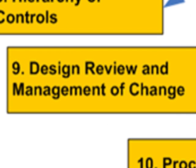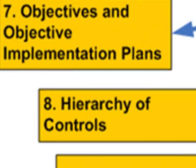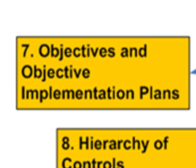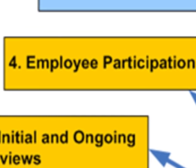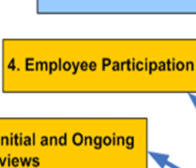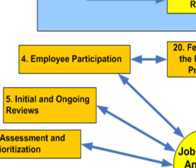The design review — what are we doing and how are we doing it — objectives and implementation plans as we move forward and we know what we're doing through a definite analysis of the tasks and jobs. The initial ongoing reviews, the setting of priorities based on the impact of the job hazard analysis, and getting employees involved in participating in the safety program to a higher degree as they are involved in the job hazard analysis.